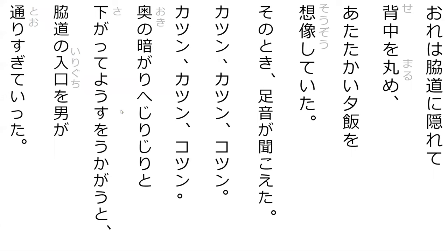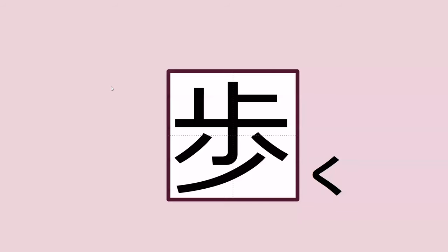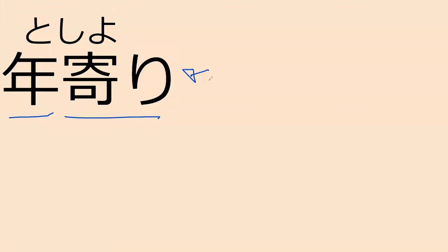We just left off with the main character hiding in a side street and some kind of man walks by. Do you happen to know what this kanji is? This is 'walking,' so perfect. This word right here is used when you want to refer to someone who's older than you, and this is the polite way to do it. So you wouldn't say 古い人, you'd say 年寄りの人.